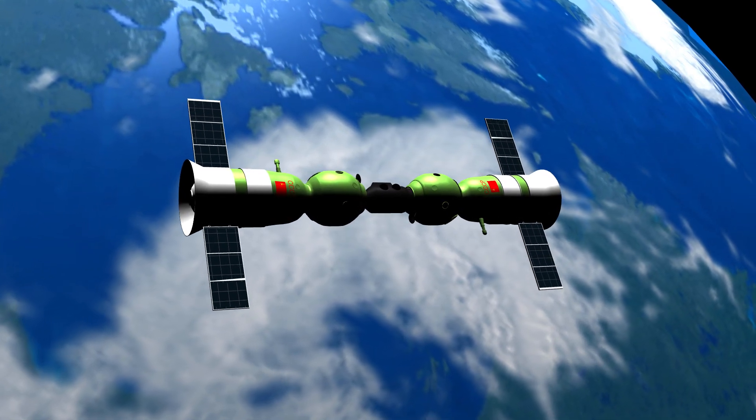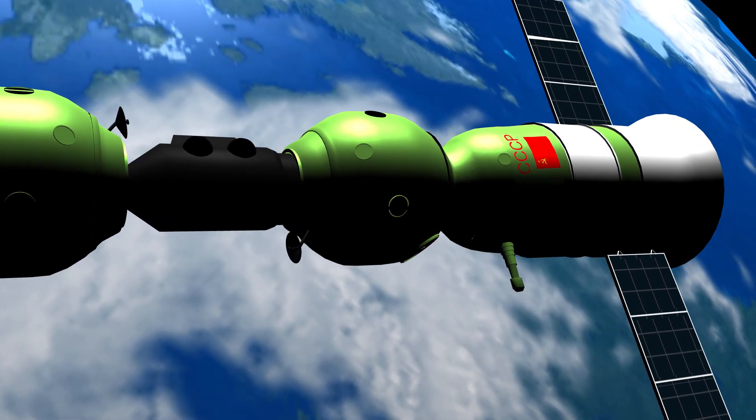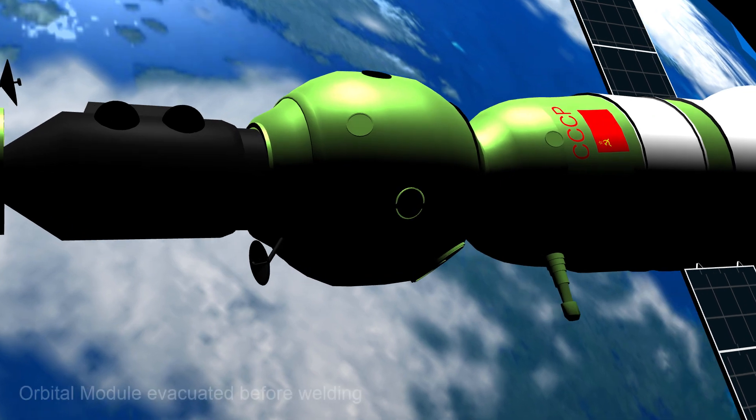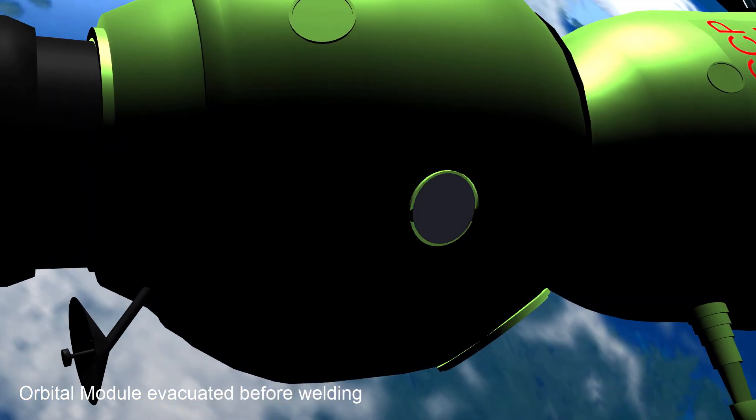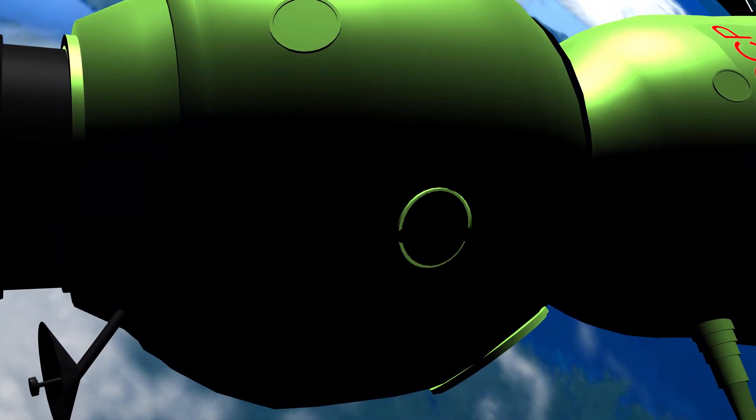Soyuz 6 was the first spacecraft in which a construction process was demonstrated in space. The process was welding. To be specific, it was electron beam and arc welding.